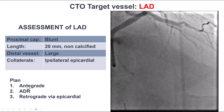Therefore, our plan for crossing the LAD CTO was to try antegrade first. If antegrade wiring did not work, then try antegrade dissection re-entry. If that didn't work, then as the last option, attempt to go retrograde through the epicardial collaterals.